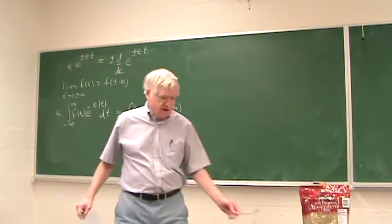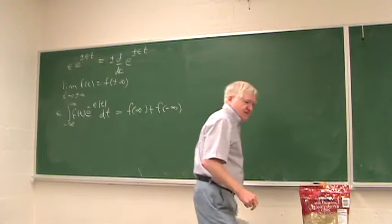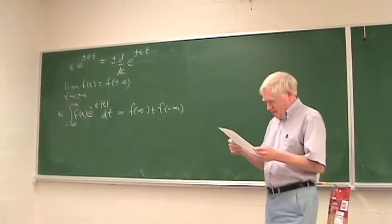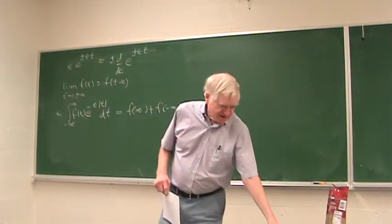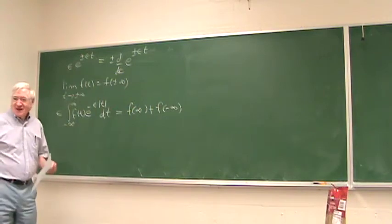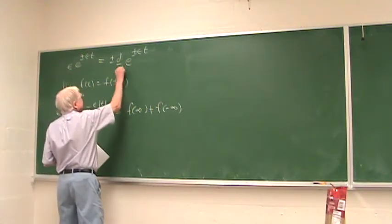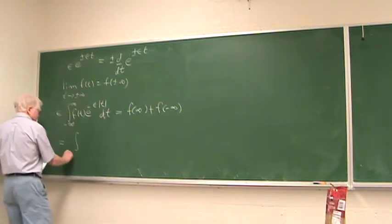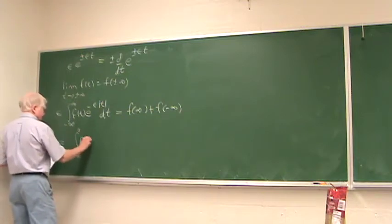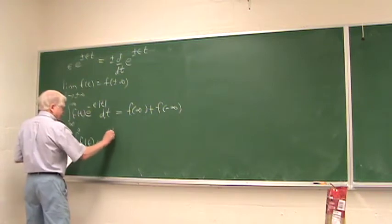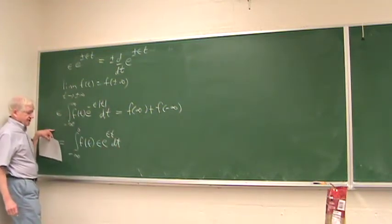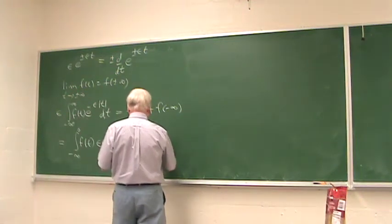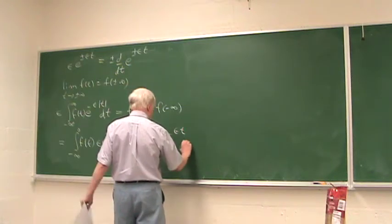The trick is to split this into two integrals: epsilon times the integral from minus infinity to zero of f(t) e to the epsilon t dt, plus the integral from zero to infinity of f(t) epsilon e to the minus epsilon t dt.